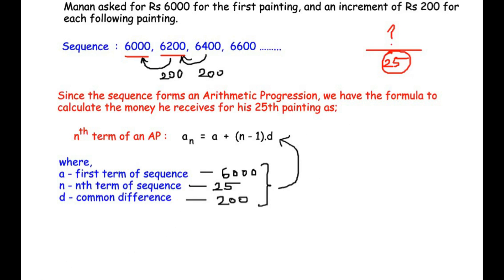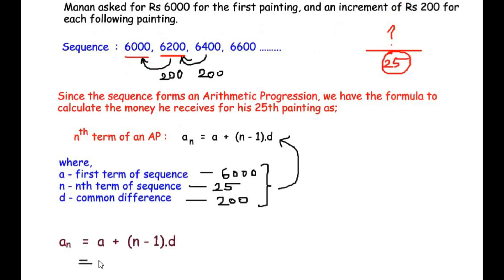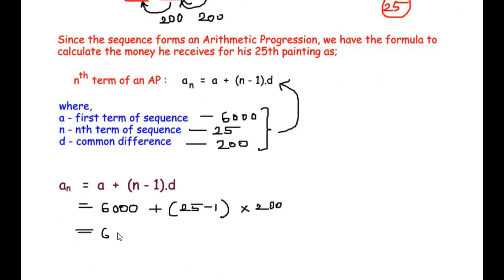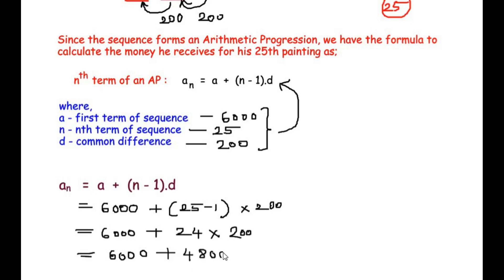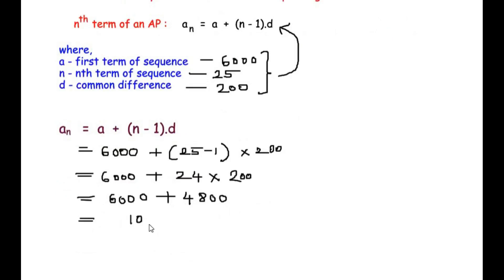Substituting: a_25 = 6000 + (25 − 1) × 200 = 6000 + 24 × 200 = 6000 + 4800 = Rs. 10,800. So for his 25th painting Manan is going to be paid Rs. 10,800.